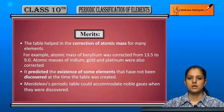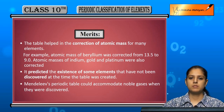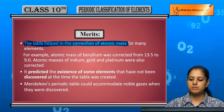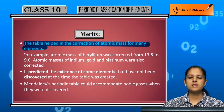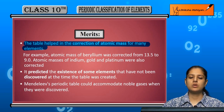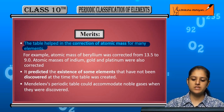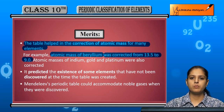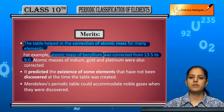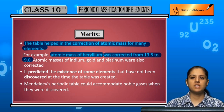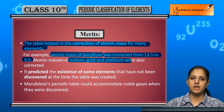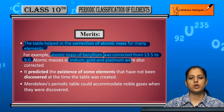Now let us have a look at the merits of Mendeleev's periodic table — the advantages. First, the table helped in the correction of atomic mass for many elements. For example, the atomic mass of beryllium was corrected from 13.5 to 9.0. Similarly, the atomic masses of indium, gold, and platinum were also corrected according to Mendeleev's periodic table.